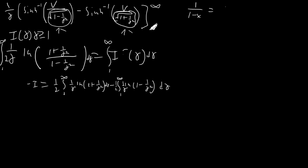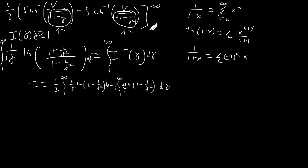We'll use power series for ln(1+x) and ln(1−x). Starting from 1/(1−x) = Σxⁿ and integrating: −ln(1−x) = Σ xⁿ⁺¹/(n+1). Similarly, 1/(1+x) = Σ(−1)ⁿxⁿ, giving ln(1+x) = Σ(−1)ⁿ xⁿ⁺¹/(n+1). Note: plugging in 0 to both sides confirms the integration constant is 0.